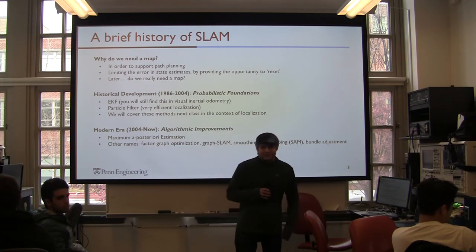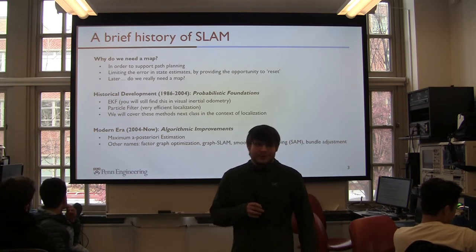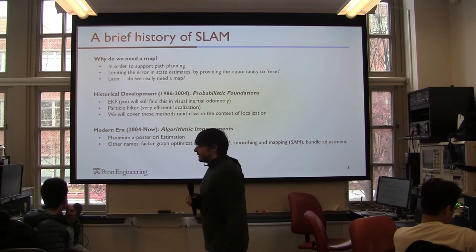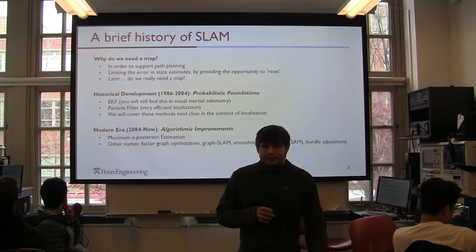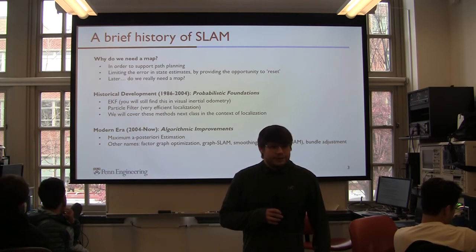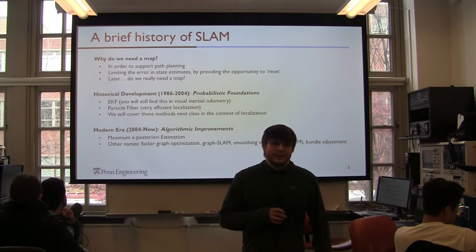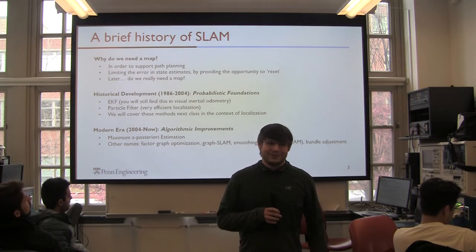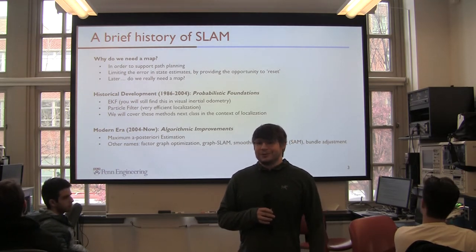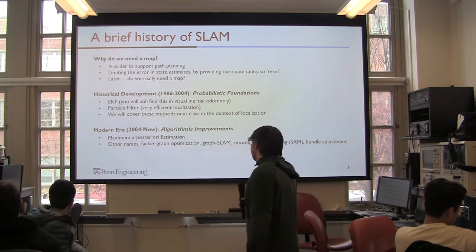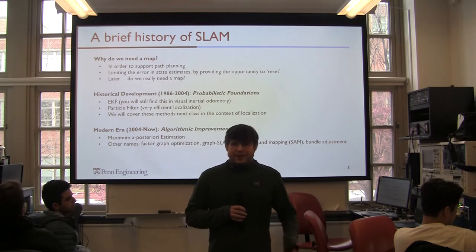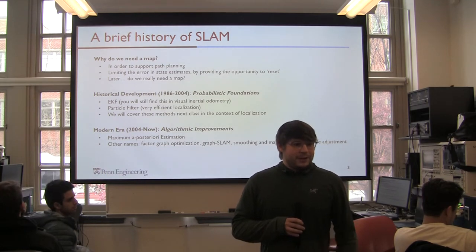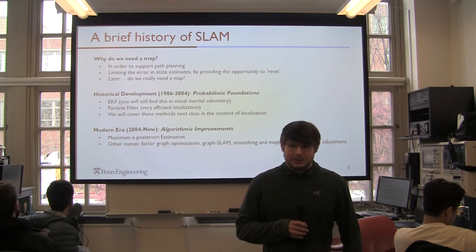As I mentioned, this topic has been studied for a while. Some people would say it's mostly solved. The historical development began around 1986, and some people used things like extended Kalman filters and particle filters to try and solve the SLAM problem. We'll talk a little more about the particle filter setting next class. We're not going to use it for SLAM because it's less efficient than the approach we're going to talk about. But if you just want to do localization, particle filters are still great. In the modern era, the problem has been well-defined — we know what the equations look like — but the real contributions have been algorithmic.